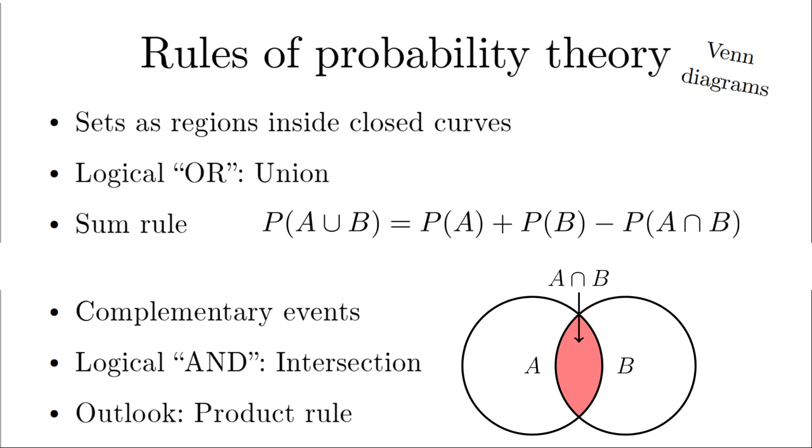The second rule of probability theory, the so-called product rule, tells us how to work with events that are combined by the logical end, like the term that we subtracted in the sum rule. A detailed discussion of the product rule follows in Unit 3. There are now some questions for you to train these concepts.